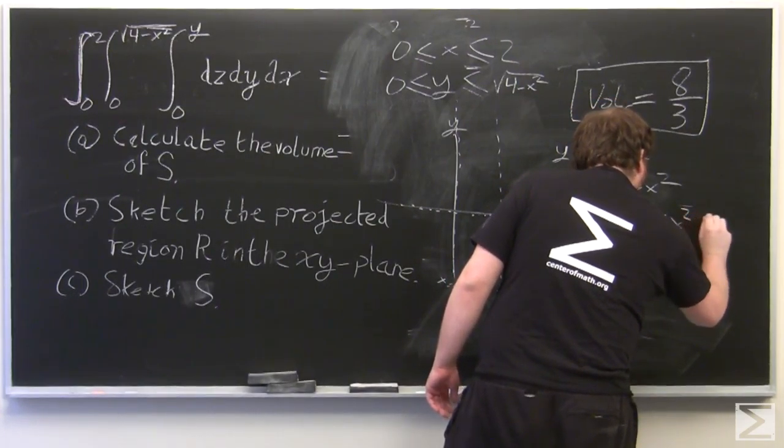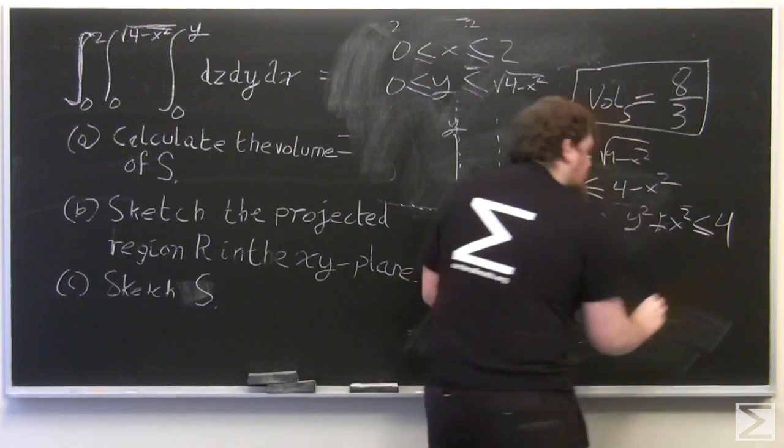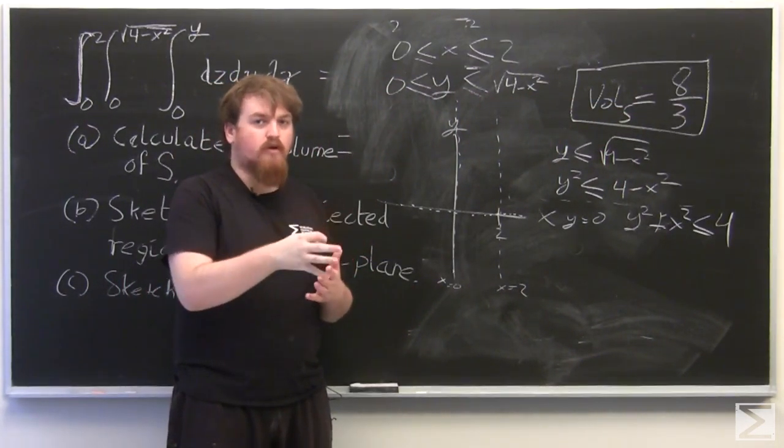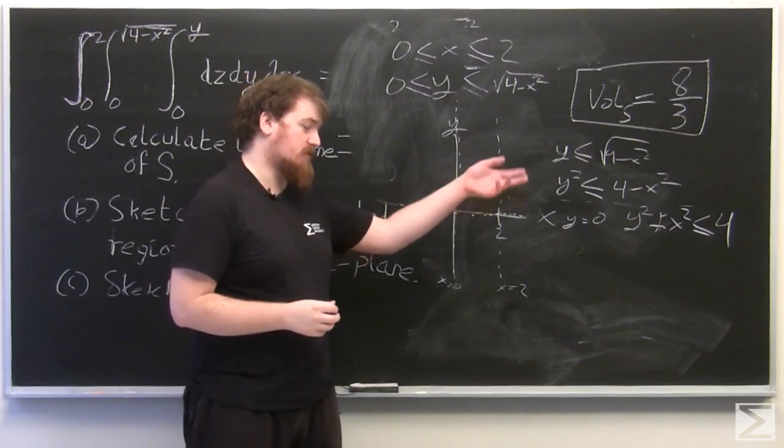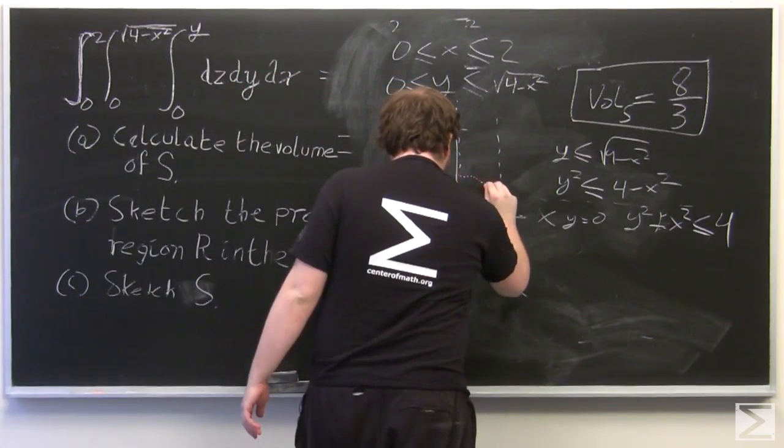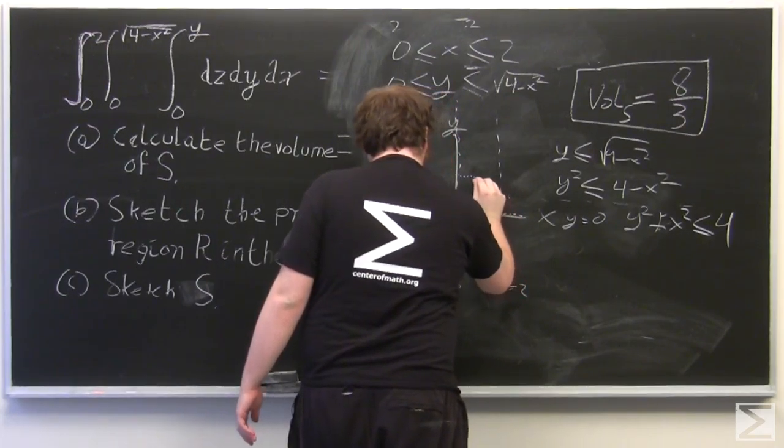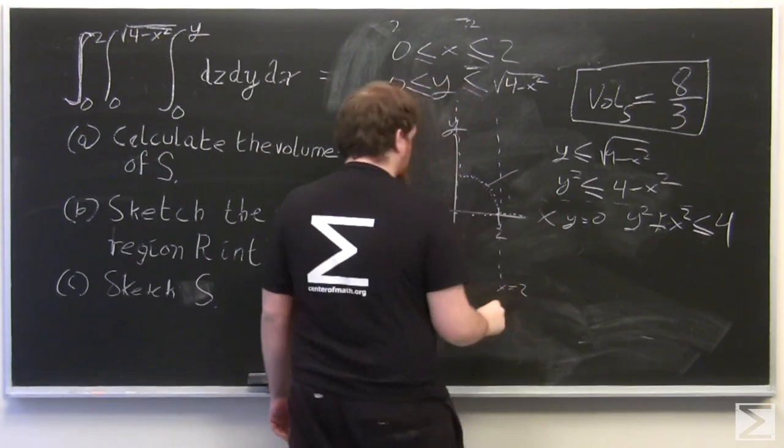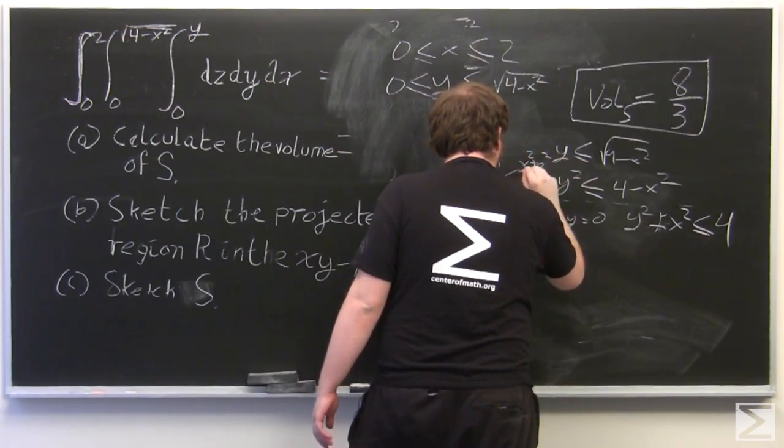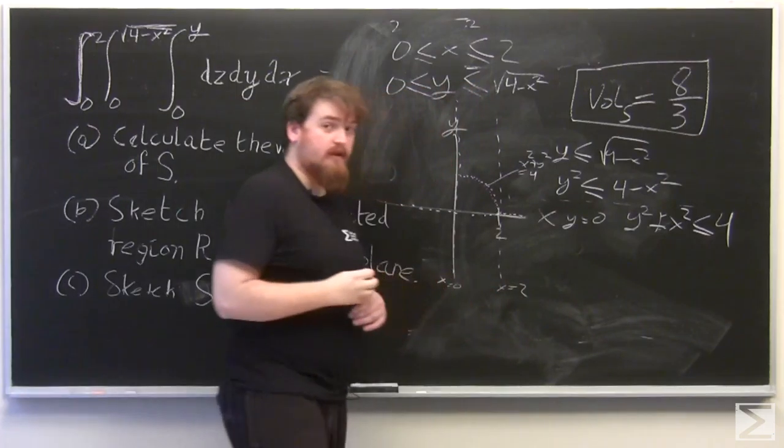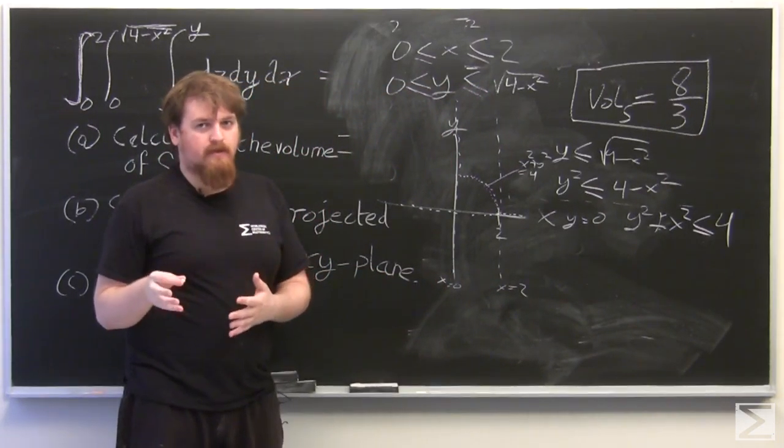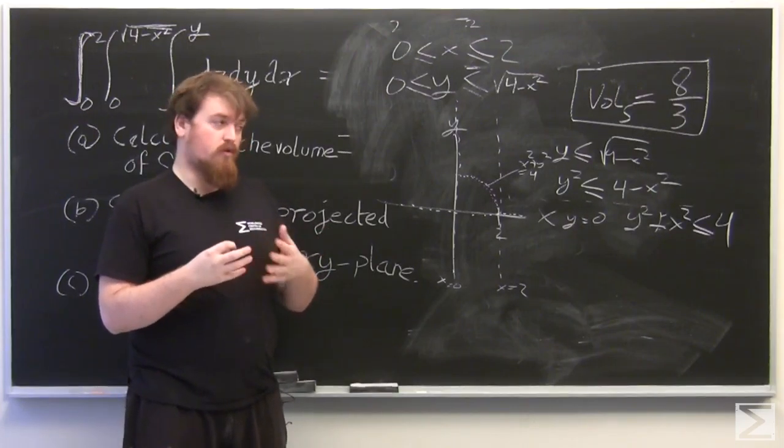So this has to be inside the disk about the origin of radius 2, because 2 squared equals 4. And so this curve is where y squared plus x squared equals 4. So these are all the bounds on the region R in the xy plane, which corresponds to the whole of S. And this is the entirety of R.